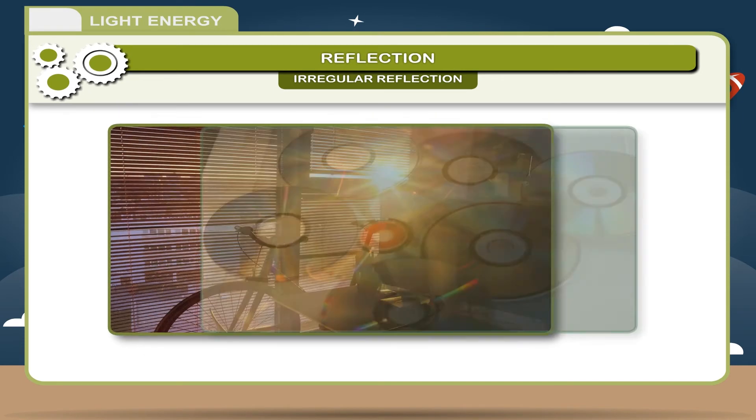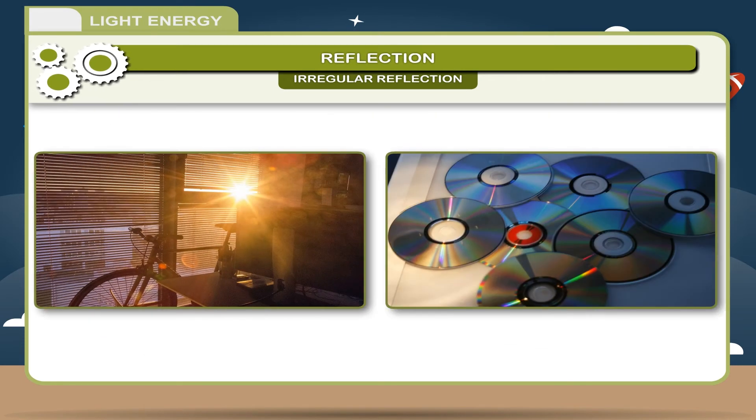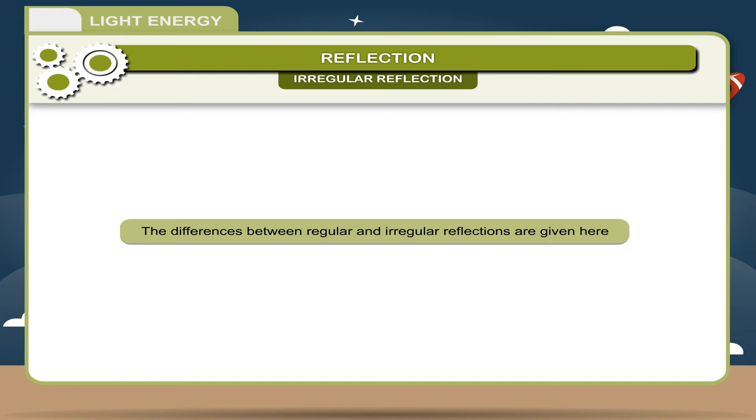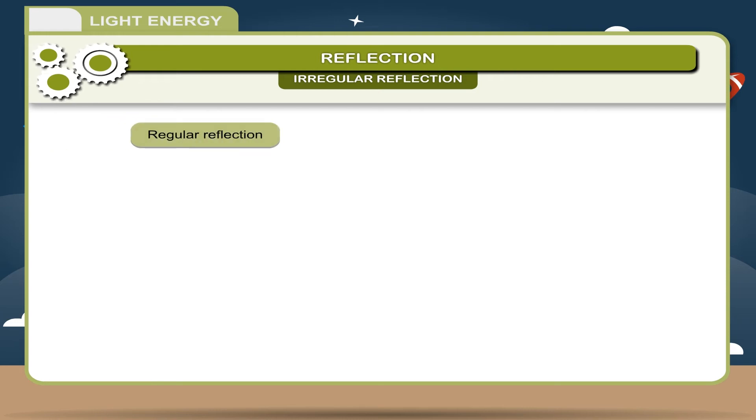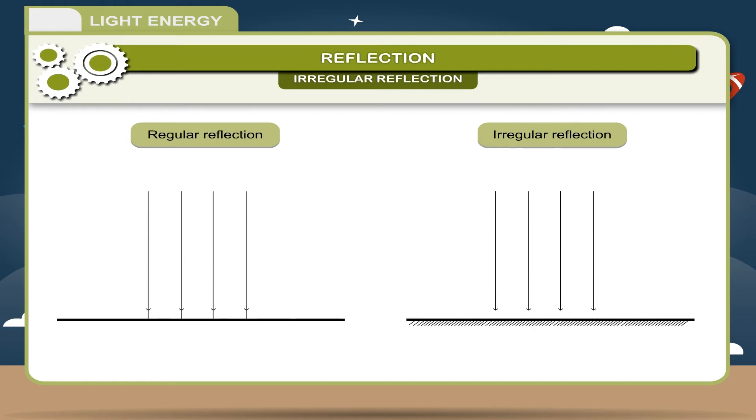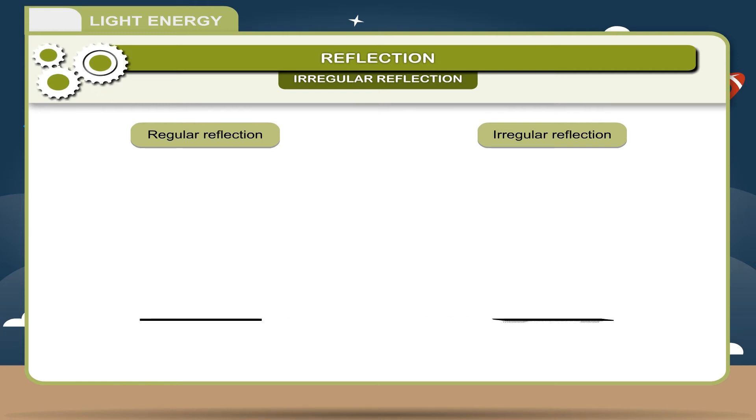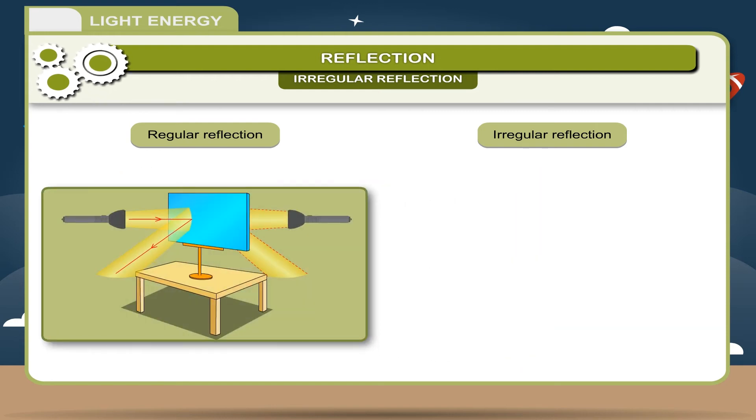The differences between regular and irregular reflections are given here. Regular reflection: one, reflected rays are parallel to each other. Two, takes place on a smooth surface. Three, helps to form the images. Irregular reflection: one, reflected rays are scattered in different directions. Two, takes place on a rough surface. Three, either forms a hazy image or no image is formed at all.